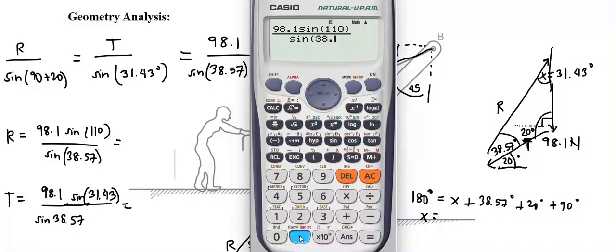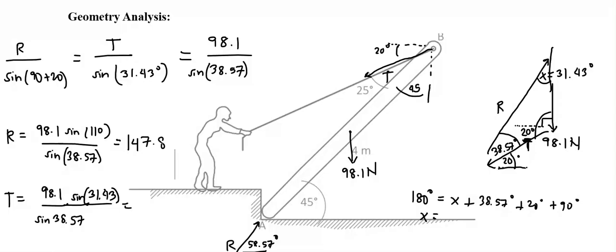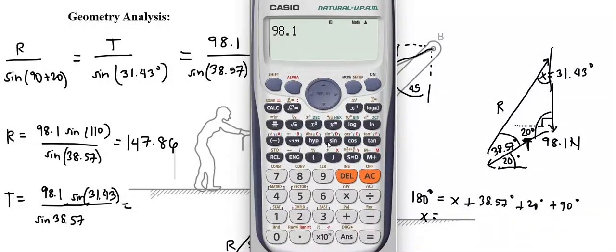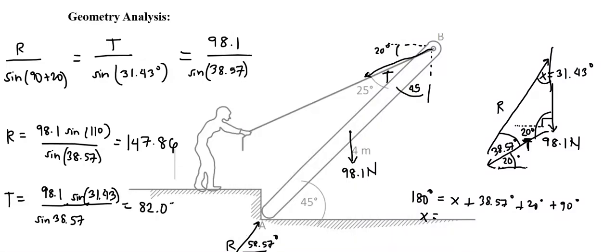For R, this is 98.1 sine of 110 degrees divided by sine of 38.57, which is equal to 147.86. And for T, it is equal to 98.1 sine of 31.43 degrees divided by sine of 38.57, which is equal to 82.05 newtons.